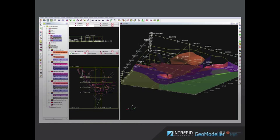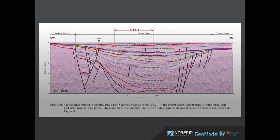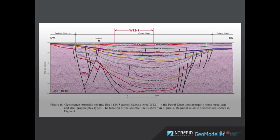Interpretations derived from other data can also be digitized and input into Geomodeller to constrain the model. For example, a geological section interpreted from a seismic line.